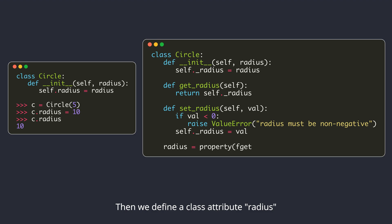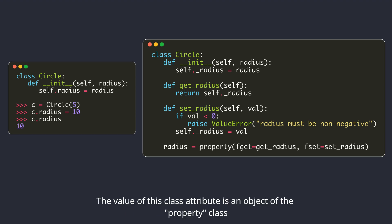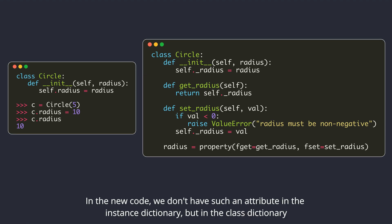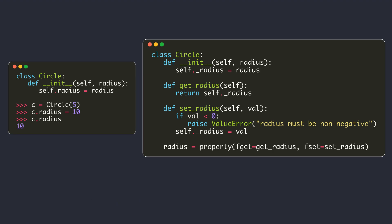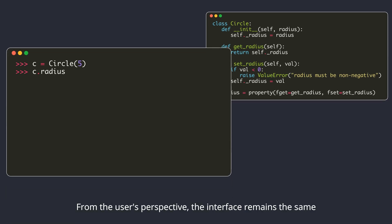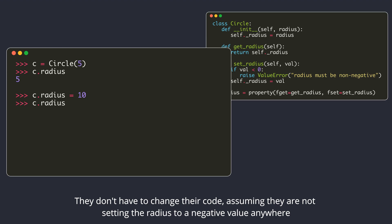Then we define a class attribute radius. The value of this class attribute is an object of the property class. We pass our getter and setter methods as arguments to its constructor. Remember, our original attribute name was radius without the underscore. In the new code, we don't have such an attribute in the instance dictionary, but in the class dictionary, and its value is a property object. From the user's perspective, the interface remains the same — they don't have to change their code, assuming they are not setting the radius to a negative value anywhere.